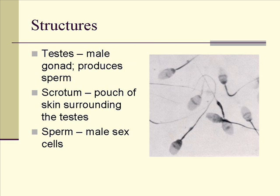The testes are one of the major structures. These are the male gonads — they're paired, there are two of them. They're sort of like the male equivalent to female ovaries. They're both paired, and that's where the sex cells are made; in the case of the testes, it's where sperm is produced. The scrotum is the pouch of skin that surrounds the testes.